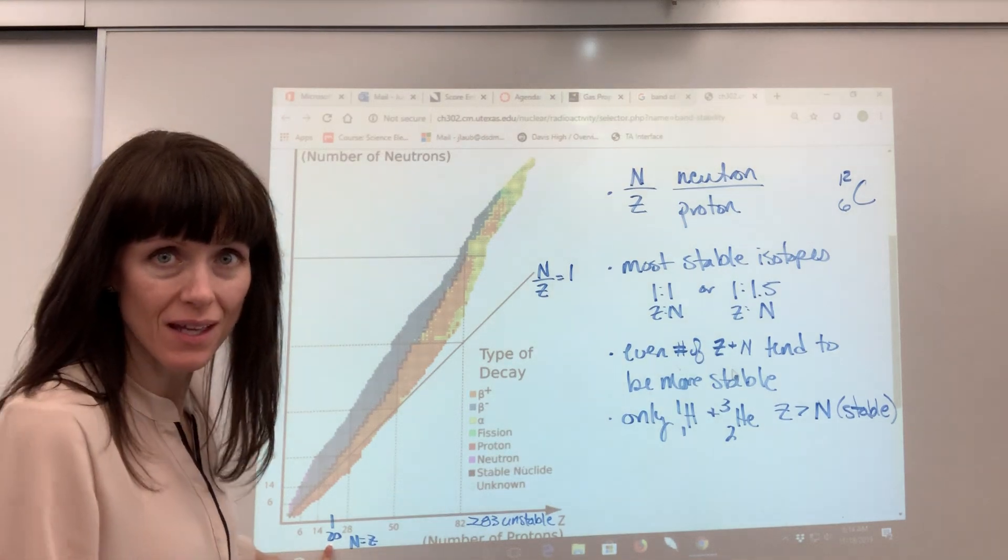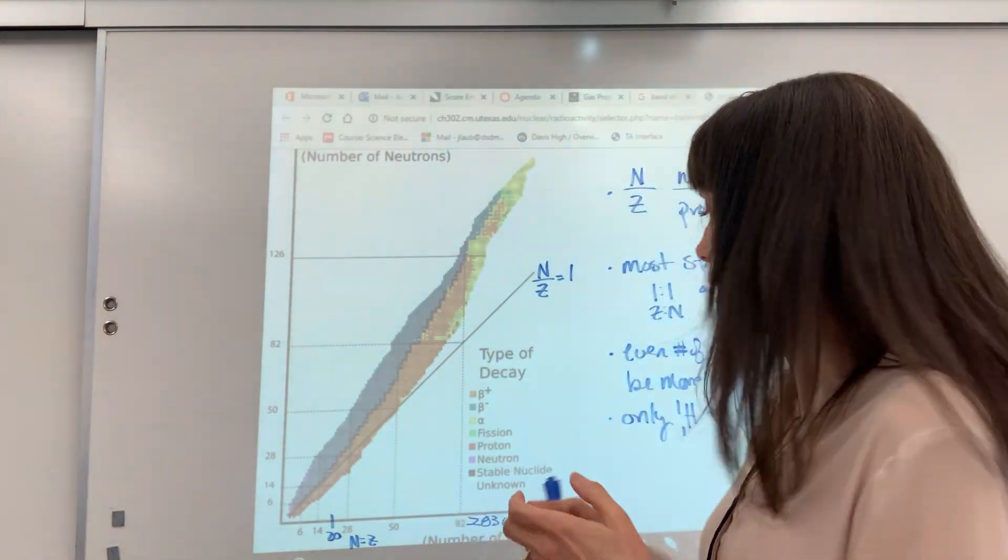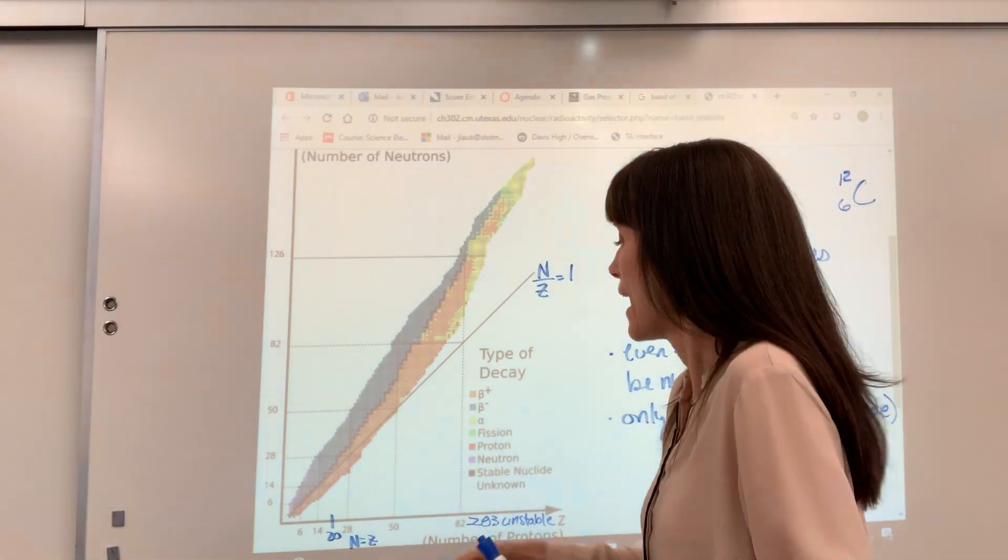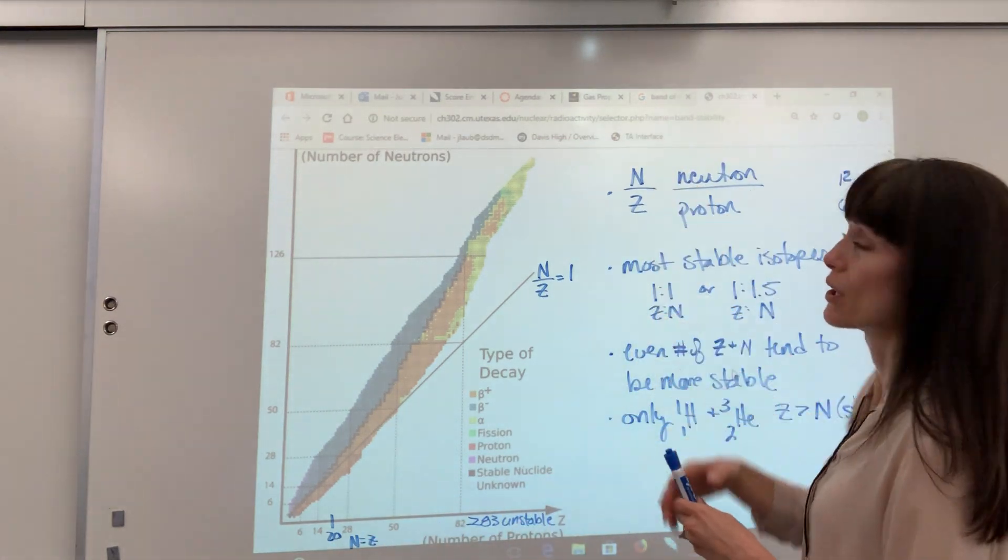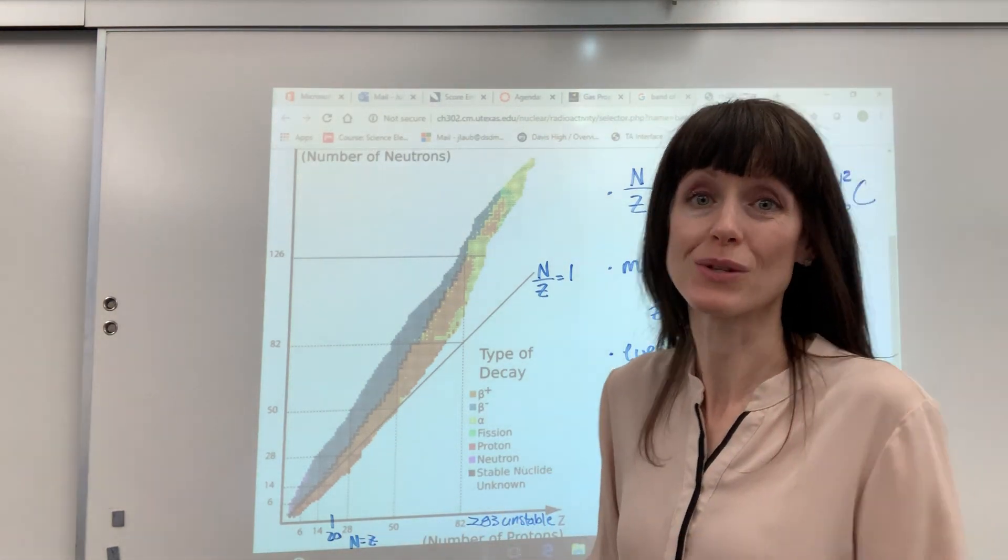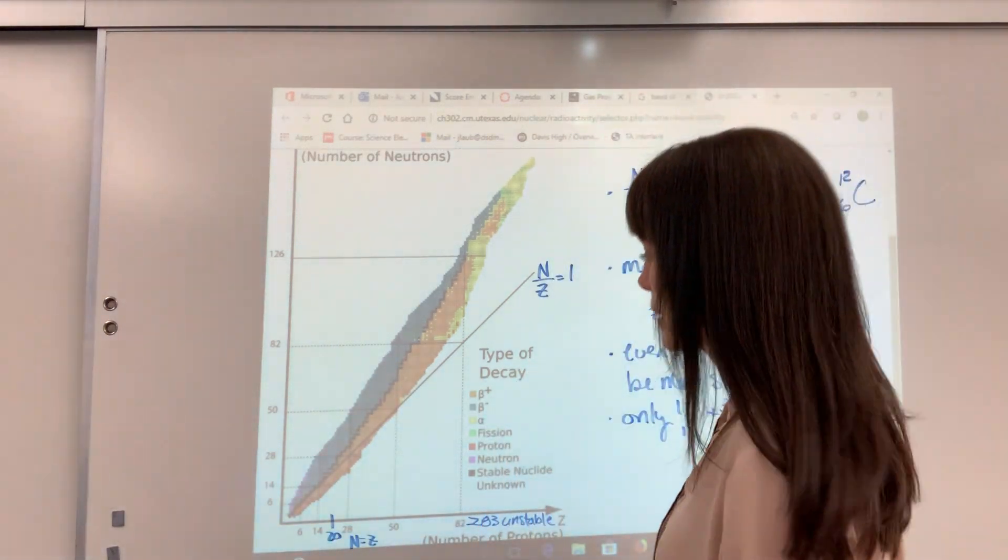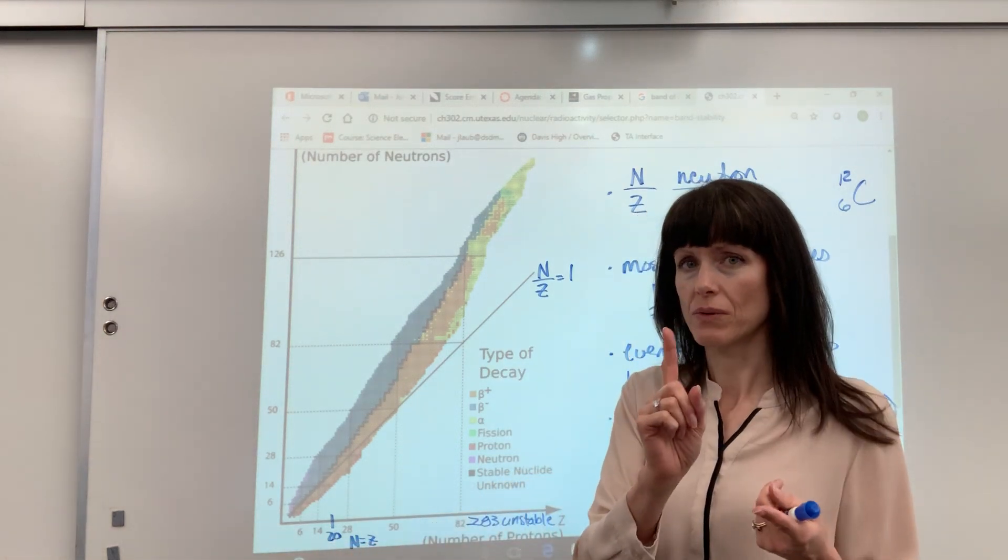After 20, or I should say up to atomic number 20, the atoms tend to have the same number of protons as they do neutrons. But after 20, which is calcium, our neutron-to-proton ratio, we are going to have more neutrons. So it's always a 1.something. It's always greater than 1. The ratio is always greater than 1.